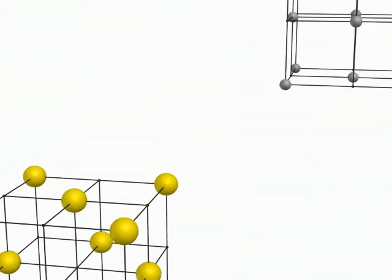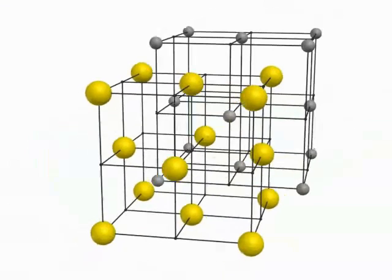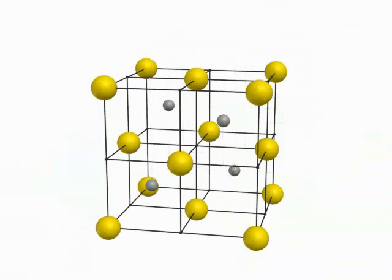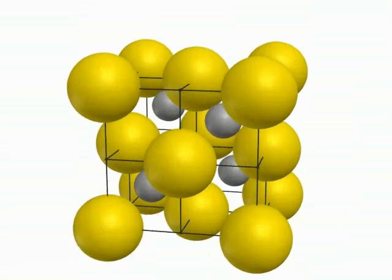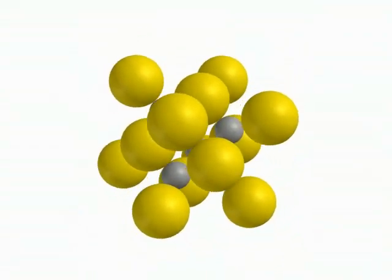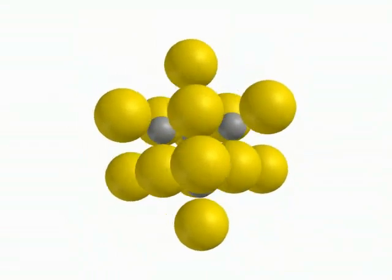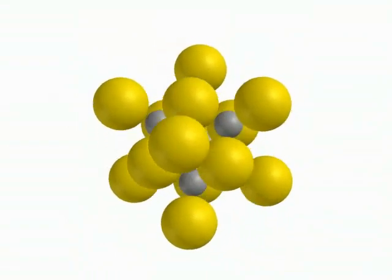Zinc sulfide adopts the zinc blend structure, as do the copper-1 halides and several other compounds. If face-centered cubic arrays of zinc ions and sulfide ions approach and interpenetrate slightly offset from each other, each ion becomes surrounded tetrahedrally by four of the other ions. Note the blinking zinc ion and the four sulfides. You can see the relative positions in this slightly expanded view of the zinc blend unit cell.